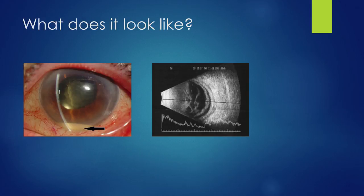This is what endophthalmitis can look like. As you can see on the left picture, there's a hypopion at the bottom of the anterior chamber, as well as fibrin within the anterior chamber, resulting in an irregular pupil due to synecchia formation. There's also loss of the red reflex, indicating vitreous opacification.